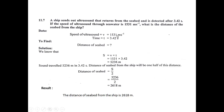Given: speed of ultrasound = 1531 m/s, total time = 3.42 seconds. We need to calculate the distance of the seabed from the ship. Using the formula s = v × t, multiplying speed by time gives a total distance of 5236 meters. This is the two-way distance covered by the ultrasound from ship to seabed and back.